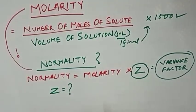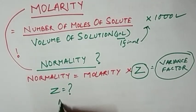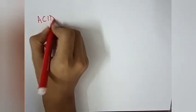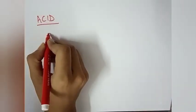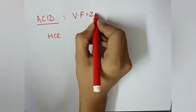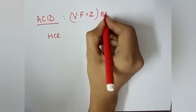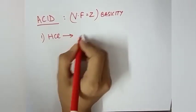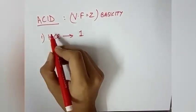This valence factor is different for different chemicals. It is different for acids and different for bases. Let's see with an acid example. For example, if we take HCl, the valence factor for acid is called basicity.